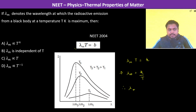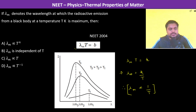Lambda m is proportional to 1 by T, which means it is inversely proportional to T. Therefore, option D is going to be the correct answer.